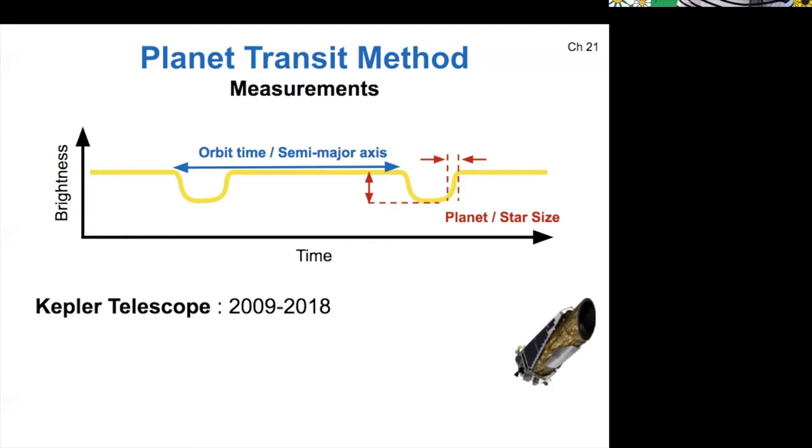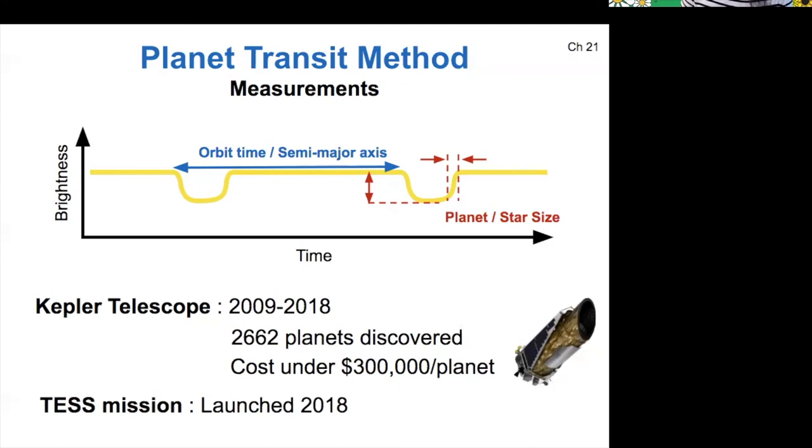All right. So the transit method is what the Kepler telescope uses. It was operational from 2009 to 2018. And during that time, it discovered over 2,500 planets. The overall cost, if you divide it by how many planets were discovered as a result, is about $300,000 per planet or a little less. The TESS mission launched in 2018. It's currently operational. And so far, they have confirmed 82 planets. There are about 2,500 candidates available. It takes time to confirm a planet. Once you have a signal that looks like a planet, you have to do some careful analysis to finally confirm that it really is one.